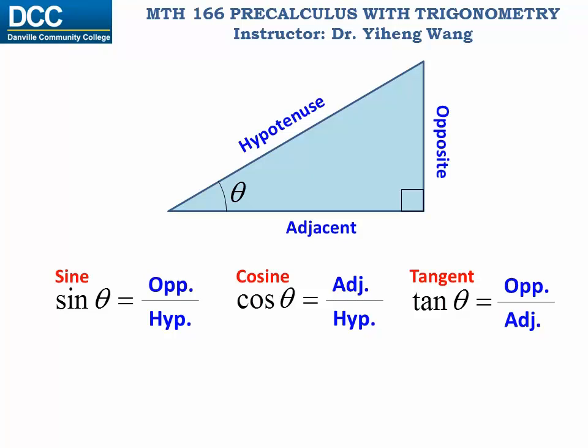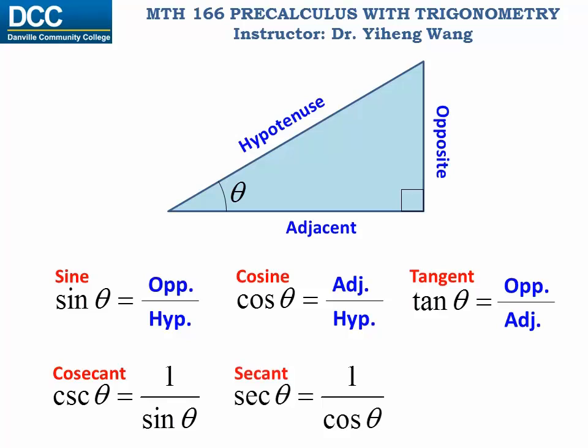And we can define the other three based on the reciprocals of these three. Cosecant theta is the reciprocal of sine theta, which equals to one over sine theta. Secant theta is the reciprocal of cosine theta. And lastly, cotangent theta is the reciprocal of tangent theta.